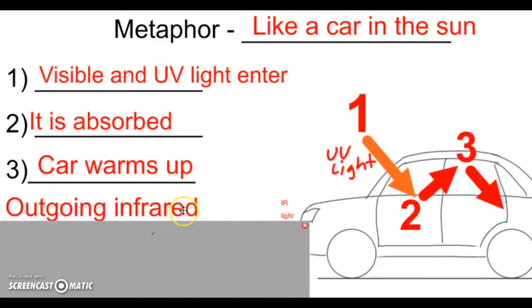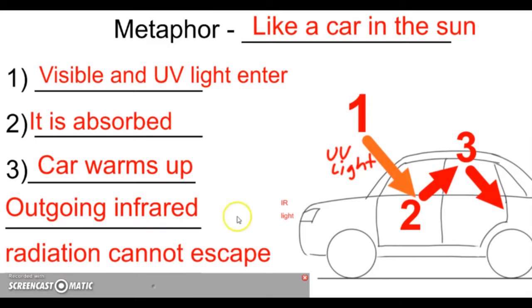Now warm things have infrared light, we learned before. So the outgoing infrared light from that warm interior of the car cannot escape the car. That's what these little bouncing arrows are.